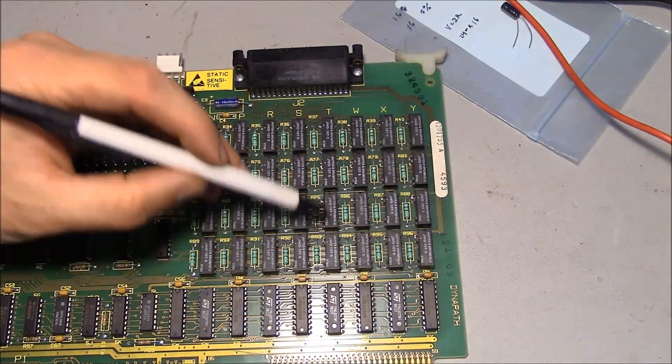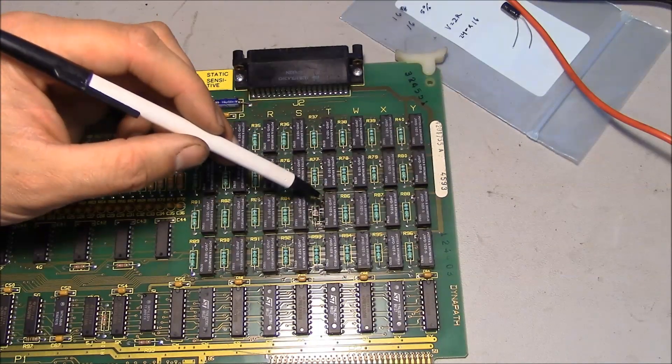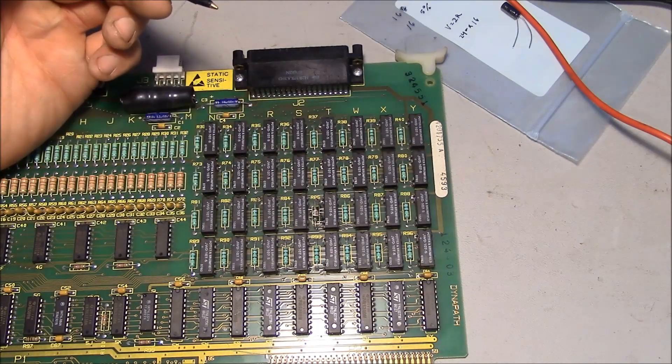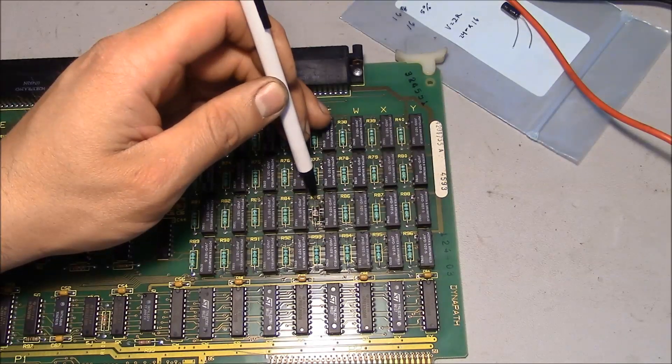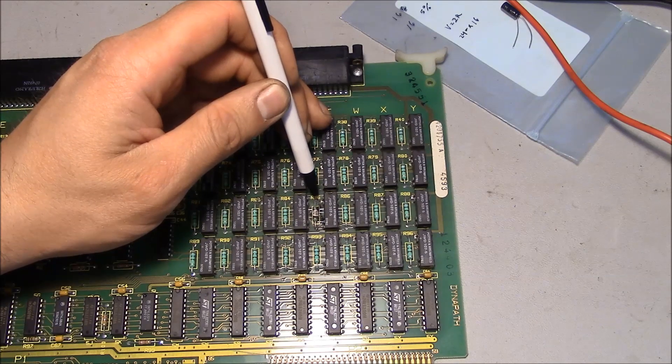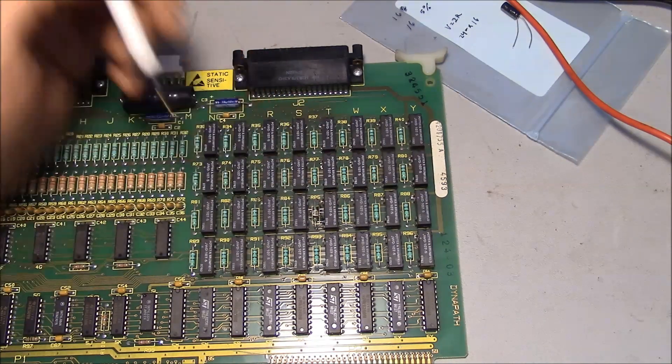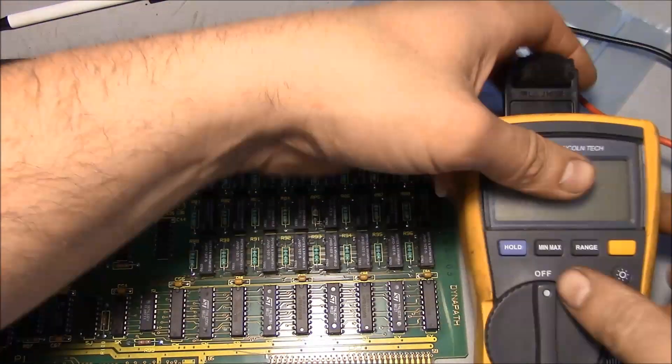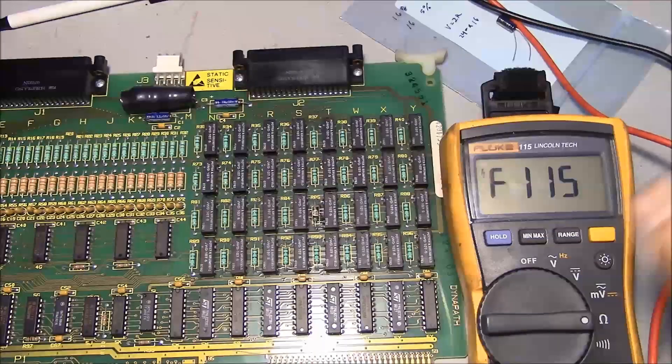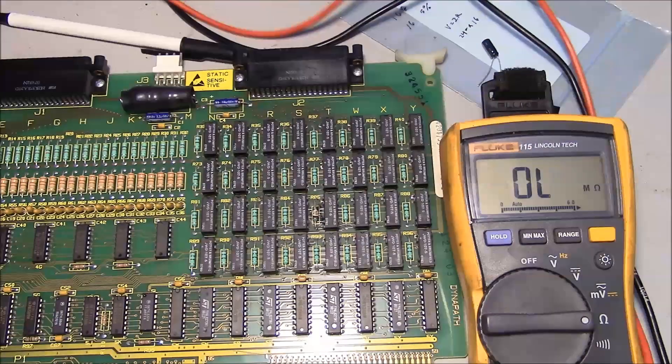Now, these are just relays. These Potter Brumfield relays right here. They're capable of switching like 10 watts. So I'm not exactly sure the purpose of this resistor, but I'm guessing it's just some kind of a current limiting resistor. And by the looks of it, I'd say it was asked to limit a little bit too much current. So we'll take a look here real quick and see what's going on. But obviously that has to be fixed.